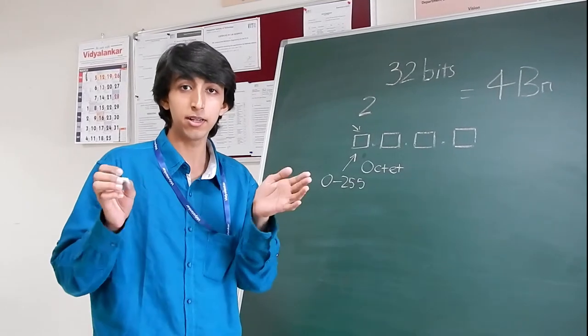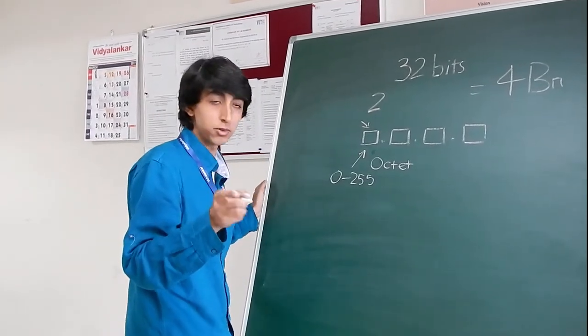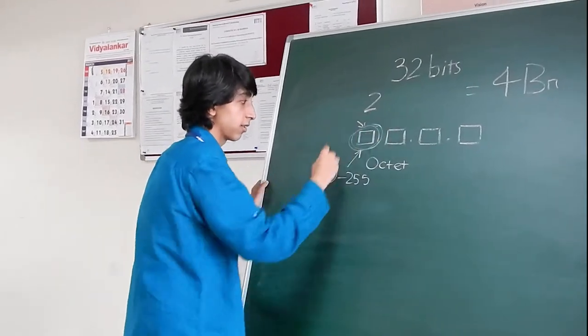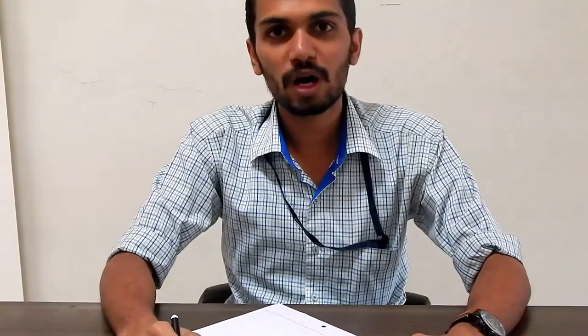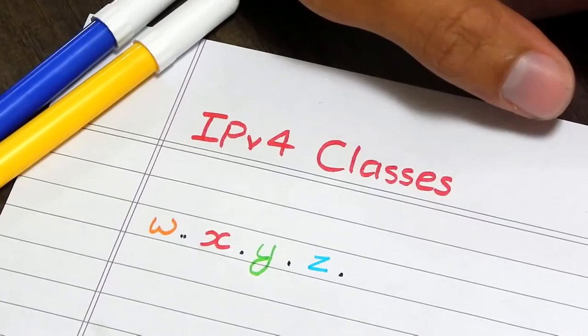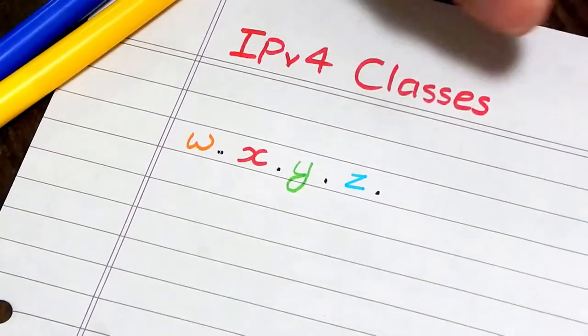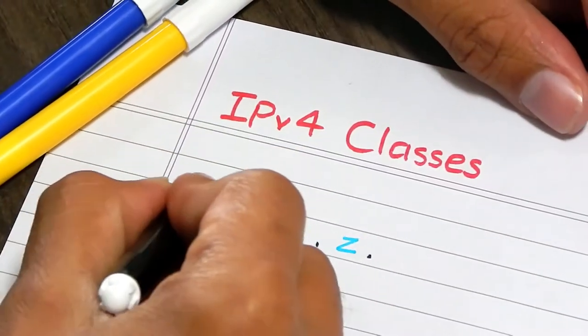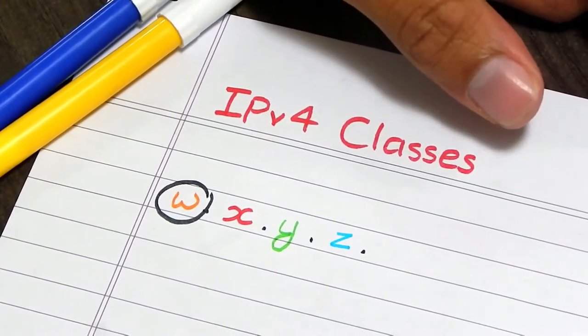IP addresses are divided into various classes and which class the IP address falls into is decided by the first octet. Now, I am going to show you how to remember classes of the IPv4. IPv4 address is written as 4 decimal octets.